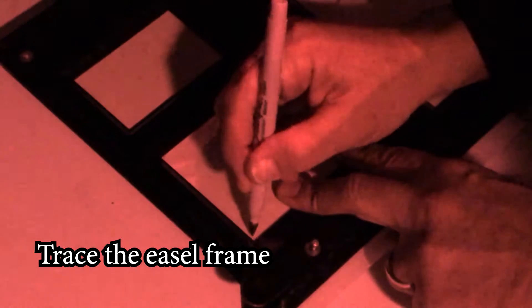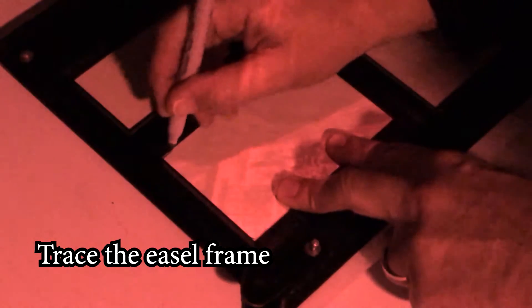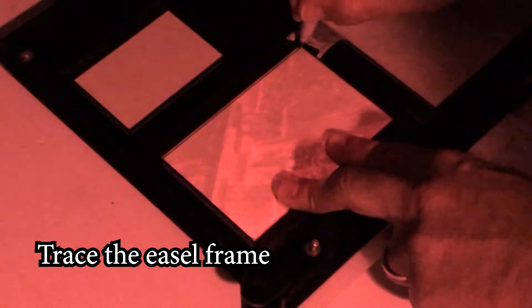We're beginning with the assumption that we have made our first two enlargements. Now we insert tracing paper. Trace the frame of the easel. Hold on to the tracing paper because it may try to slip around.